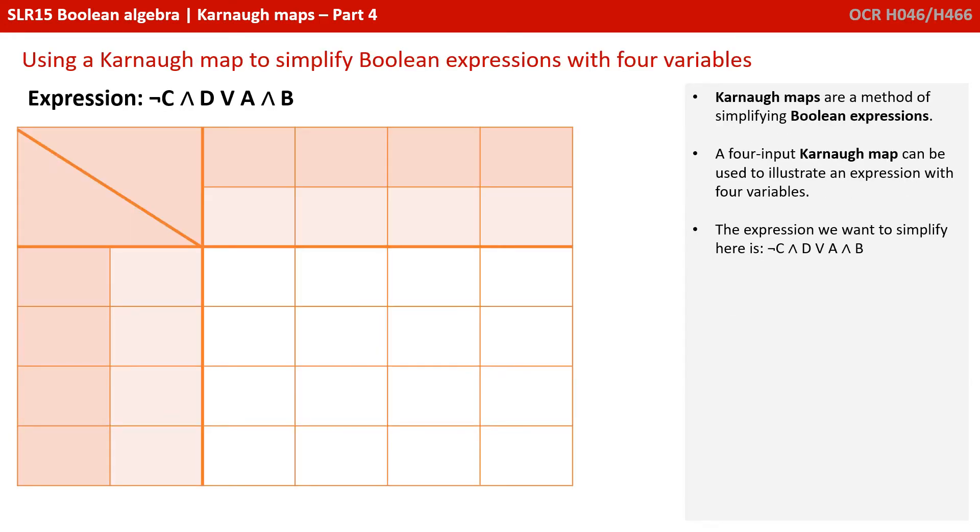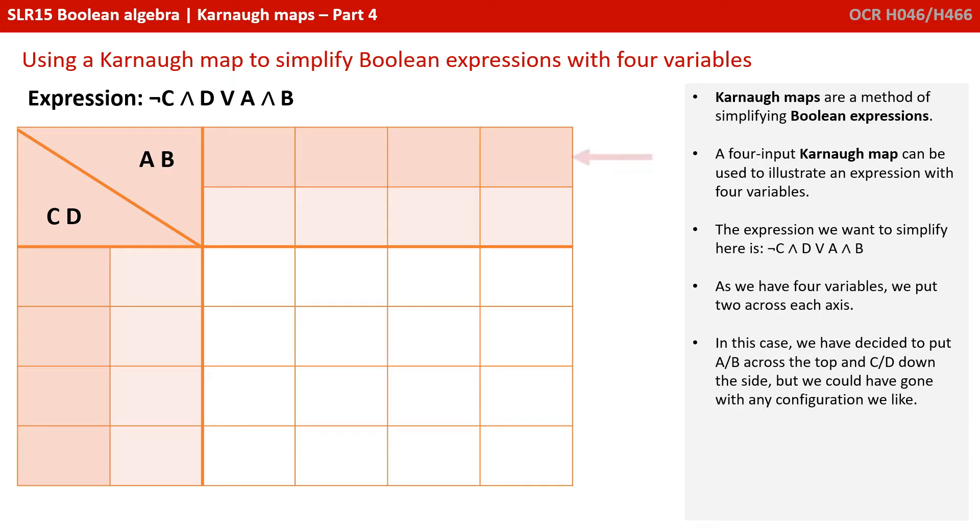Karnaugh maps are a method of simplifying Boolean expressions and a four input Karnaugh map can be used to illustrate an expression with four variables. The expression we're going to simplify is not C and D or A and B. As we have four variables, we put two across each axis. In this case, we've opted to put A and B across the top, C and D down the side, but we could have gone for any configuration we like.